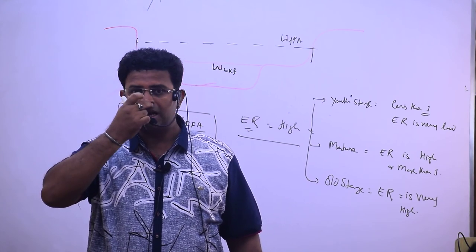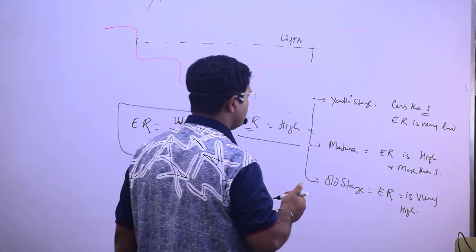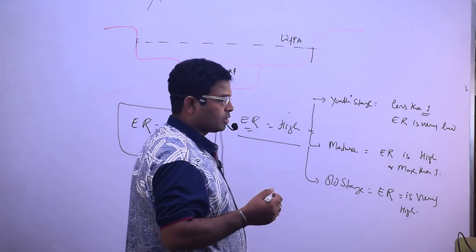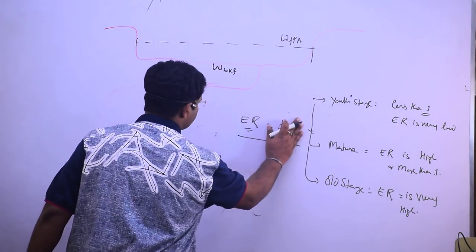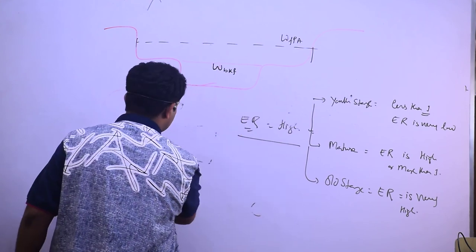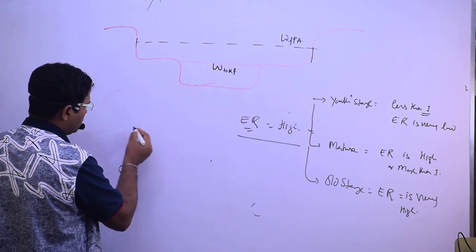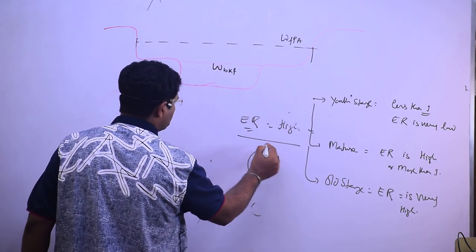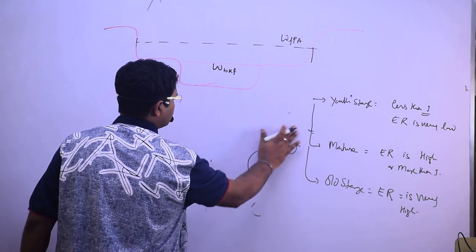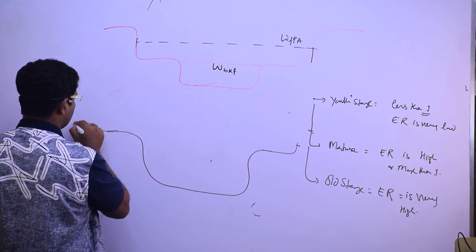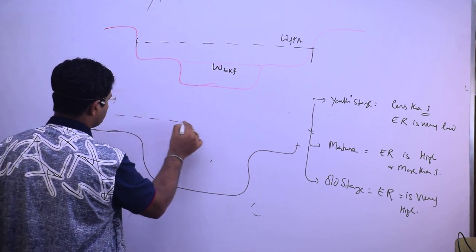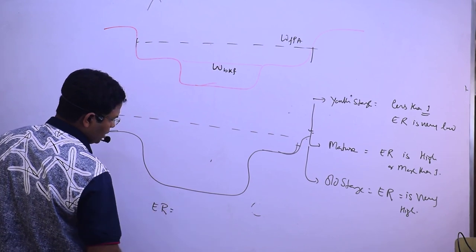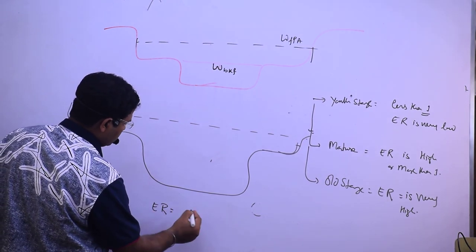For example, consider the Ganga River near Allahabad — the entrenchment ratio there can be used as an illustration.